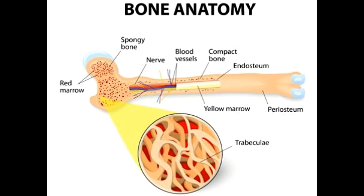Difference between spongy and compact bone structure: The compact bone is an elongated cylindrical structure that forms the tough outer layer of the majority of bones. Also referred to as the cortical bone, it provides a framework and strong support to the human body. It is heavy, tensile, dense, and primarily consists of calcium. Its strength and hardness can be judged from the fact that a saw is required to break the bone into pieces.